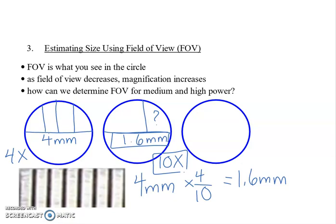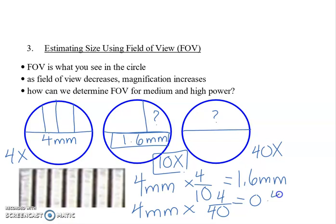We can use that same method on high power. I want to find out what the field of view is on high power, but a ruler obviously is not possible. So I'm going to compare back to 4 millimeters, because I could use a ruler for that, and multiply by the ratio of objective lenses. So this time it's 4 over 40, and that gets us 0.4 millimeters across the field of view on high power. This is very small, so we don't like to use millimeters because it's too small to report it.